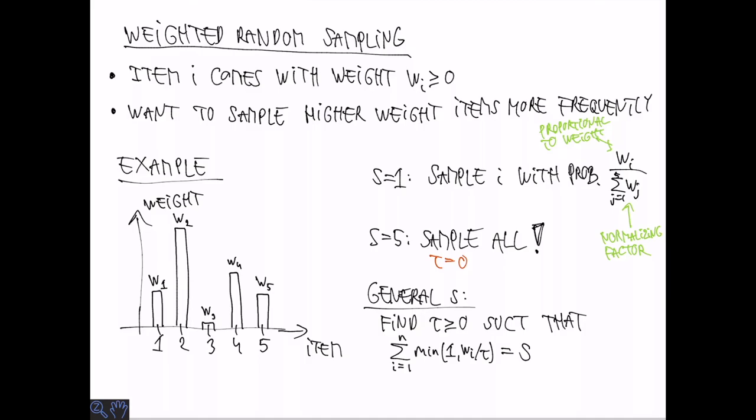So how does this look in general? So let's consider a general sample size s. So the idea here is that we find some cutoff point, which we call tau, such that if we sum the minimum over all weights of wi over tau and one, we get exactly s. So in the case where we sample all, this corresponds to tau equal to zero. The minimum will always be one. And in the case where we sample just a single item, it corresponds to tau equal to the sum of all items.